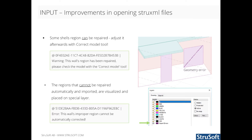Now, when you import a StruXML file that contains some bad shell geometry, FemDesign will try to repair it to a FemDesign compatible format. When the repaired model is imported, it is necessary to run the correct model tool to adjust the model geometry. If a shell region cannot be automatically imported, it will be visualized and placed on a special layer called import errors.